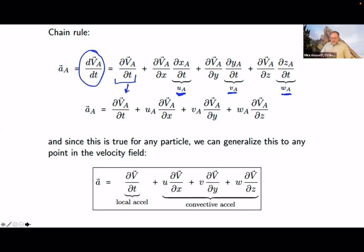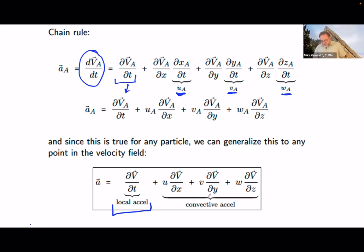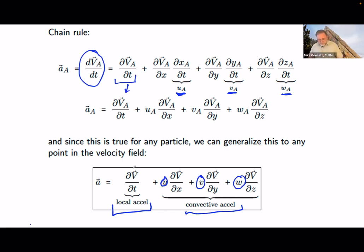Our acceleration breaks up into two pieces. First, there is a local acceleration — that's how the velocity vector V is changing in time. If it's accelerating (increasing speed), this is positive; if it's decelerating, it's negative. Plus, we have three components for what we call the convective acceleration. The convective acceleration includes velocity components U, V, and W. The local acceleration only accounts for the overall vector change with time.